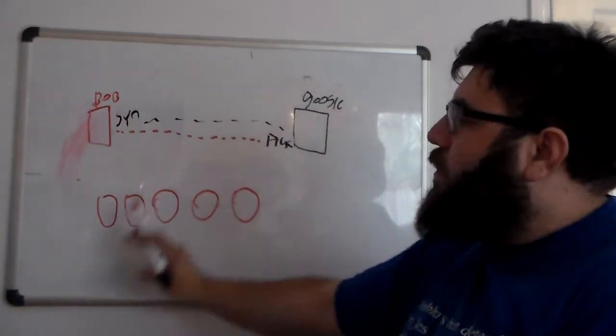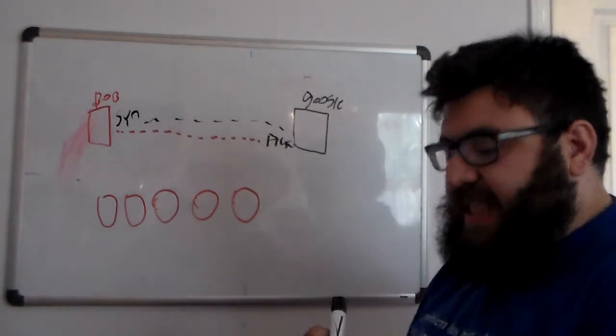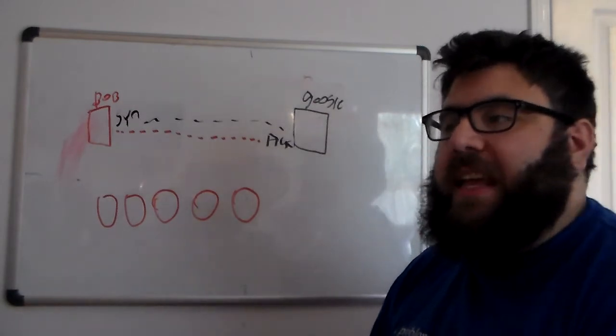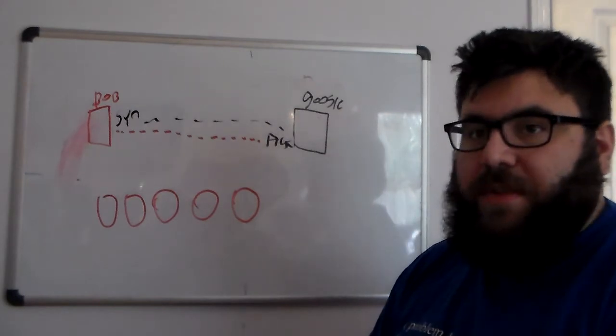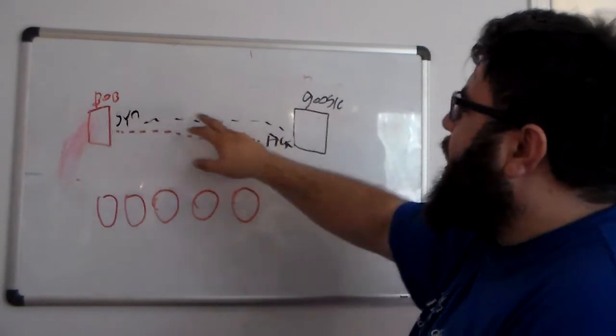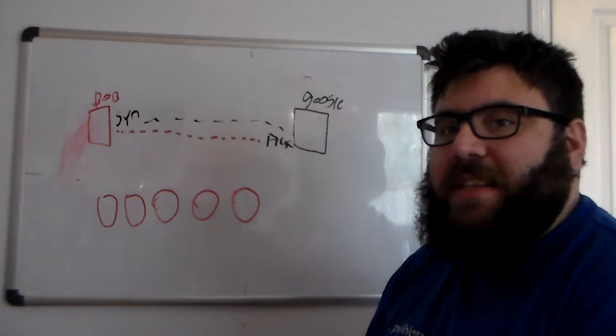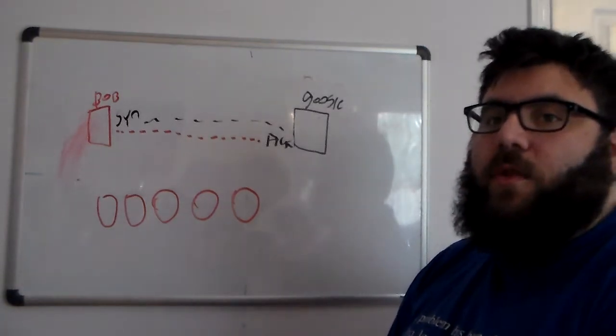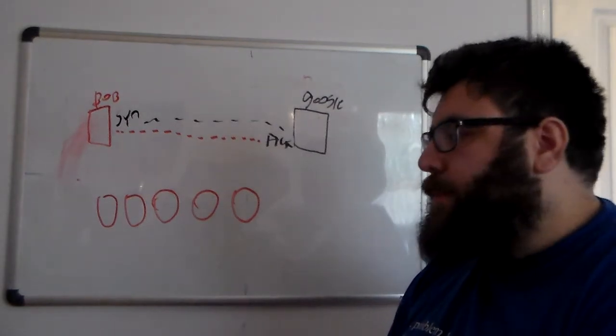And Google will respond with the ACK. But the thing is that every time Google receives a SIN, a little bit of memory is taken on the Google servers. Because what happens is that when the SIN reaches Google, that server is expecting that a connection is going to be established. So it reserves a small amount of RAM to accommodate for that connection.